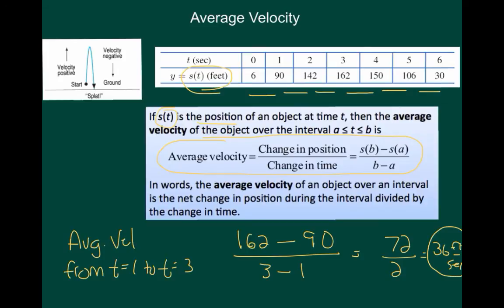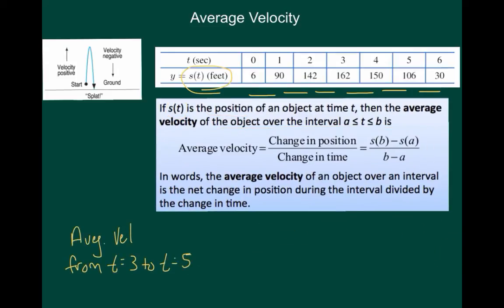What happens if we look at the same calculation, but over a different time period? Let's look at the average velocity from time 3 until 5. This time, the position at time 5 is 106, and we're subtracting the position at time 3, which is 162. And then we'll divide by 5 minus 3. Here the numerator will be a negative 56 over 2. And so, we see that the average rate of change over this time is negative 28 feet per second.